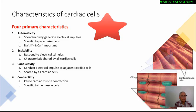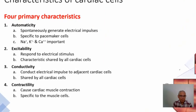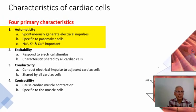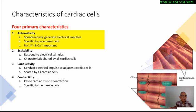This brings us to the characteristics of cardiac cells. There are four major characteristics of cardiac cells. The first one is automaticity — the ability of the heart to generate electrical impulses without influence of nervous system control. This is specific only to pacemaker cells.